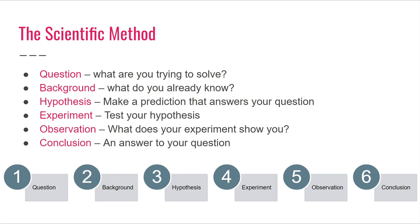The first step of the scientific method is to identify a question — a problem or observation that you're trying to explain or solve. The next step is to conduct background research or brainstorming, to determine what you already know and brainstorm solutions. One of the most important steps is to develop a hypothesis — a prediction that answers your question. It's not important that your hypothesis is correct, because the main point of science is to learn new information through trial and error.